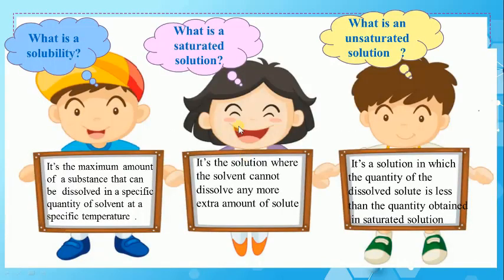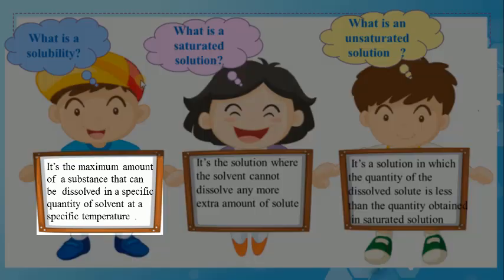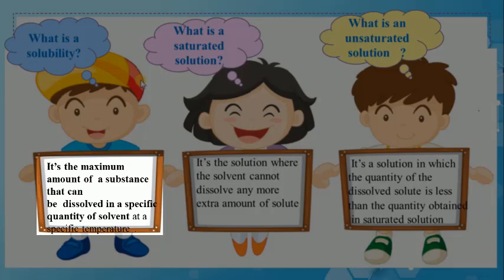Let's start our session by a recall about what you have learned in Part 1 of Solubility. Question 1: What is solubility? It's the maximum amount of a substance that can be dissolved in a specific quantity of solvent at a specific temperature.